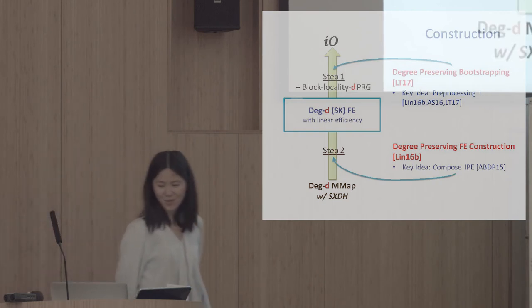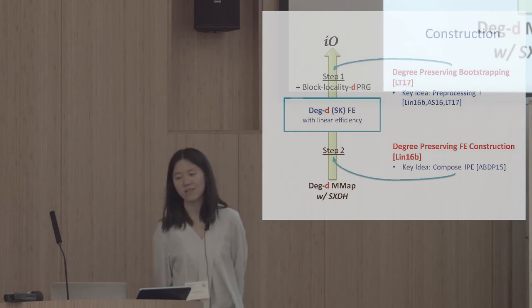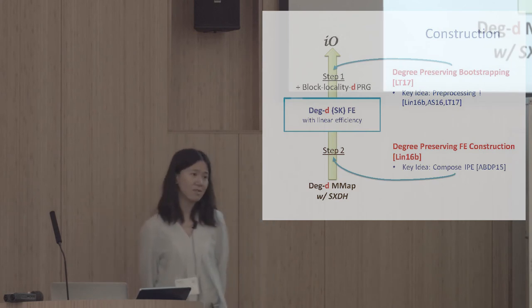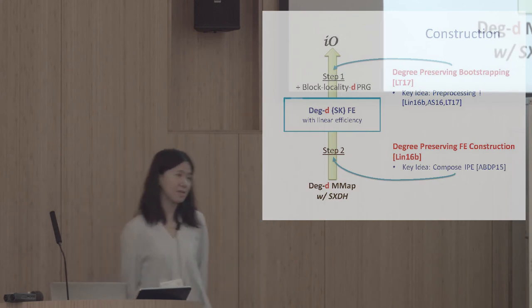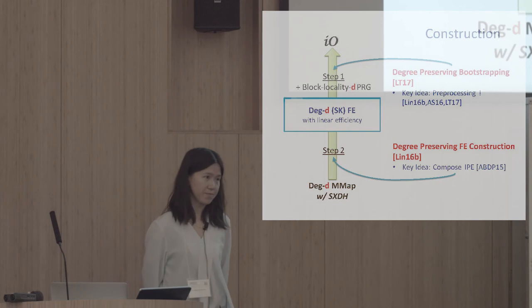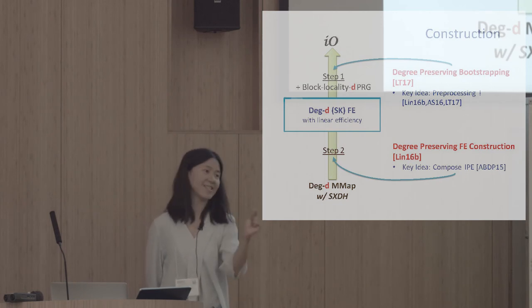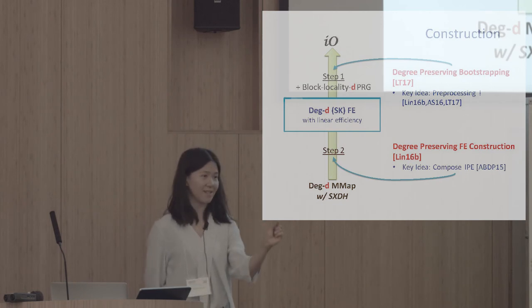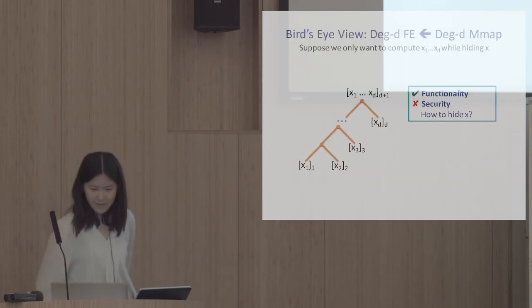Given that we have the bootstrapping, the next goal is to construct low-degree functional encryption using multilinear maps, using the exact same degree multilinear map.